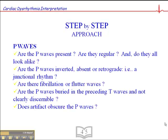When we look at P-waves, we want to know: are they present, are they regular, and do they all look alike? If they're present, regular, they all look alike, and there's one P-wave preceding each QRS, then we're dealing with a sinus rhythm. If they're absent, inverted, or retrograde, we may be looking at a junctional rhythm, or if it happens with a single beat, a premature junctional beat. If there are fibrillatory waves or flutter waves, we may be dealing with some other rhythm.